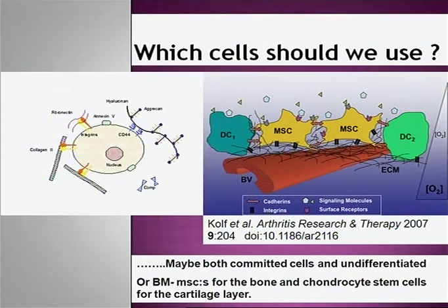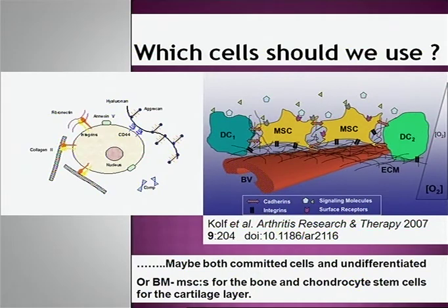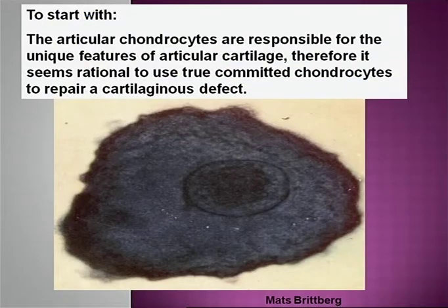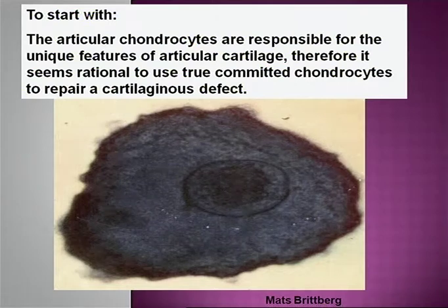So which cells should we use? Maybe both committed cells from cartilage and undifferentiated cells from bone marrow, or bone marrow stem cells for both bone and chondrocyte areas — that is the question. We have to look a little at chondrocytes, because chondrocytes are responsible for the unique features of articular cartilage and they produce the cartilage that we want.